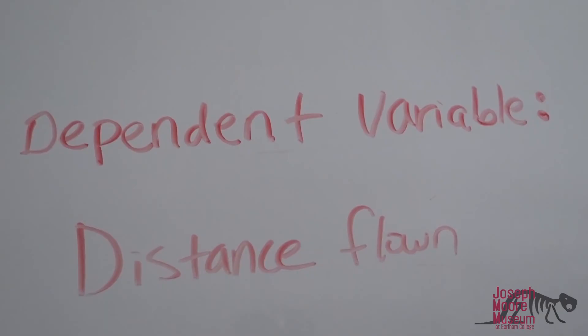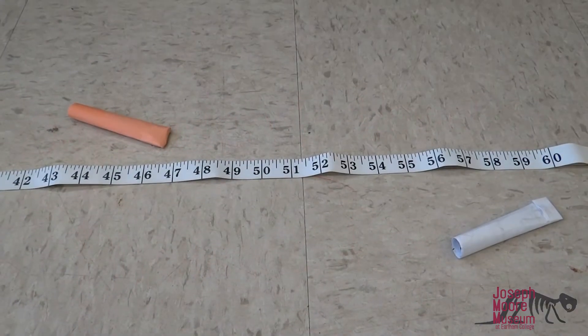Your dependent variable is what you measure or observe. In this case, it's how far the different rockets fly.